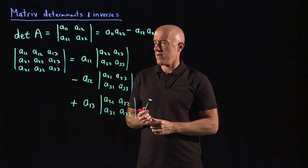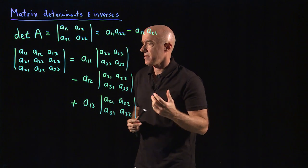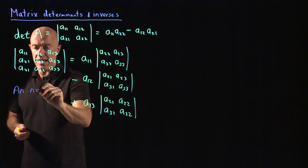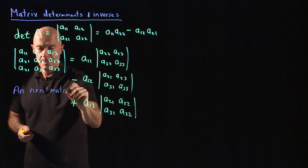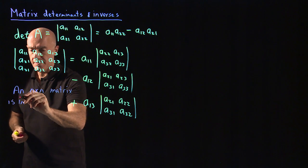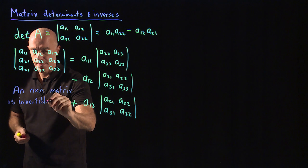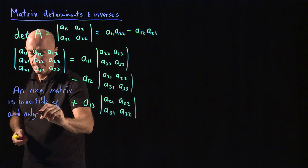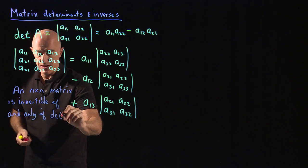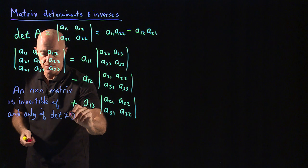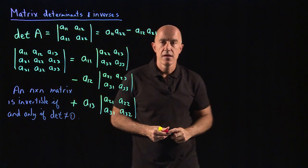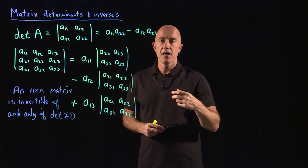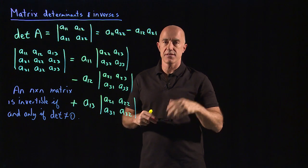The important theorem here is that an n by n matrix is invertible if and only if the determinant of that matrix is not equal to zero. So it gives us a theorem. The determinant gives us a theorem on how to decide whether a matrix is invertible.